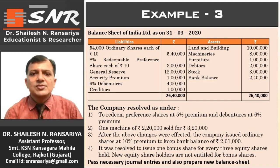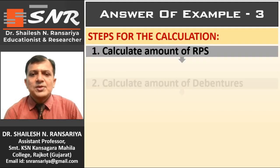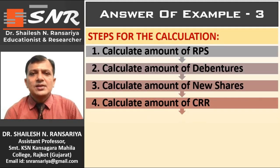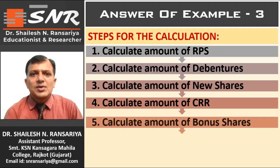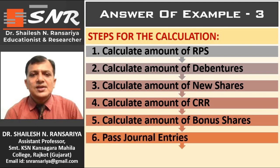See the steps for the calculation. First, we will calculate the amount of RPS and the amount of debenture. Then, the amount of new shares by preparing the cash and bank account. Then, the amount of CRR. Then, the amount of bonus share. Then, journal entries. And last, the balance sheet.